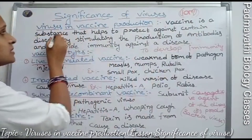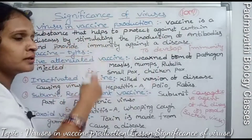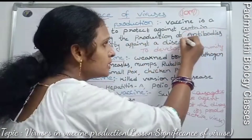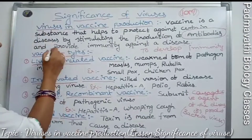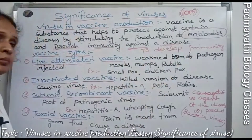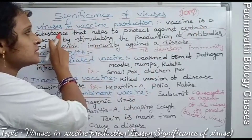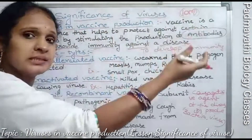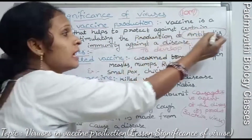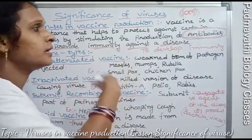Vaccine is a substance that helps to protect against certain diseases by stimulating — that is, activating — the production of antibodies, and provides immunity against a disease.